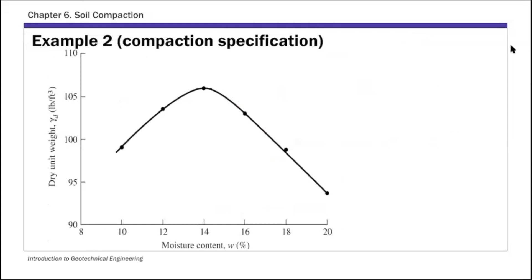That's the compaction curve. And from that, we're going to get gamma d max. That's the dry unit weight, y-axis value corresponding to the peak of this curve. And this is about 106 pound per cubic foot. That's gamma d max. And then the corresponding moisture content, that's what we call w opt, optimum moisture content. And if you read this value from the horizontal axis, it's 14.4%. So that's basically part one of this example, we get these two values, gamma d max and this optimum moisture content.